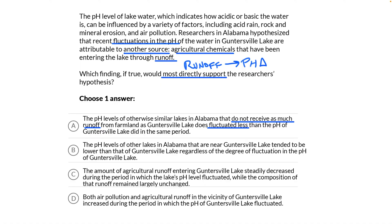On the test, I would circle it and move on. But let's knock out the other three to prove why A is the answer. Choice B: the pH levels of other lakes in Alabama that are near Guntersville Lake tended to be lower than that of Guntersville Lake regardless of the degree of fluctuation. This doesn't support the hypothesis — the argument is not about how low the pH is, it's about how much the pH changes, the fluctuation. Choice C: the amount of agricultural runoff entering Guntersville Lake steadily decreased during the period in which the lake's pH level fluctuated, while the composition of that runoff remained largely unchanged. Again, this doesn't support the hypothesis — it talks about the decreasing rate of runoff, which isn't really relevant.